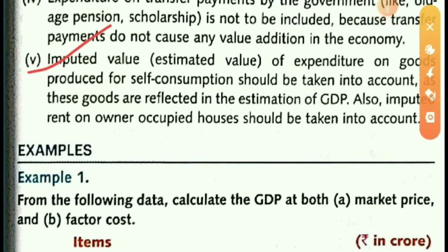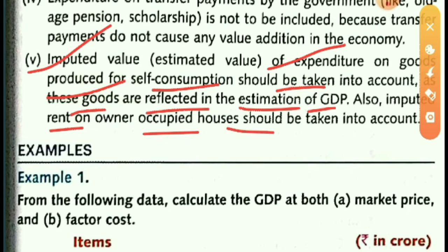Fifth precaution: the imputed or estimated value of expenditure on goods produced for self-consumption should be taken into account, as these goods are reflected in the estimation of GDP. Also, imputed rent on owner-occupied houses should be taken into account. For example, if a car company produces a car for its own use, the expenditure on it should be included; similarly, imputed rent on self-owned property should also be included.